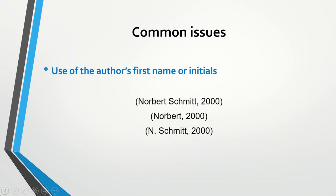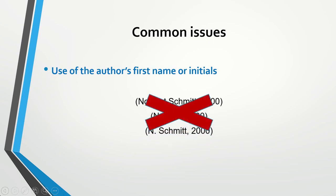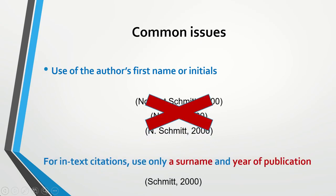The first common issue is related to the author's name. Sometimes students use both the first name and surname, like 'Norbert Schmidt 2000,' or only the first name 'Norbert 2000,' or an initial and surname like 'N. Schmidt 2000.' All these examples are incorrect. Please remember that when citing sources you need to use only the surname and year of publication — so the correct version is 'Schmidt 2000.'